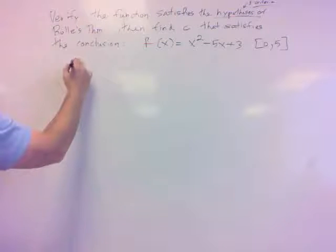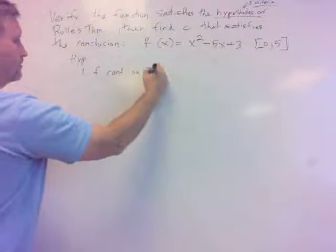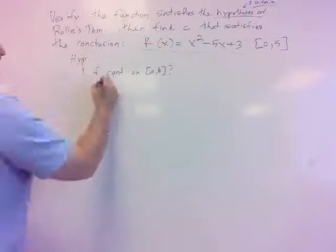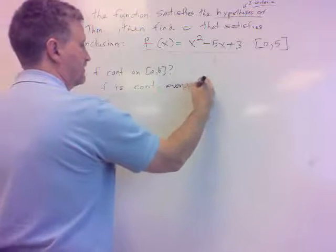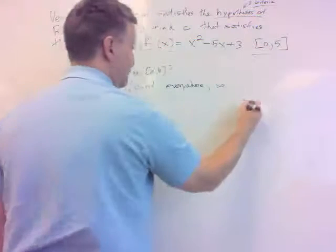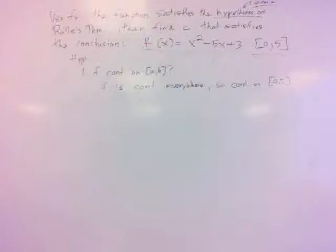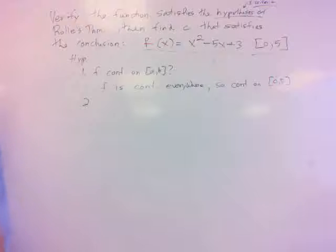So what do we want to do? Well, so here's your hypotheses. Number one hypotheses is what? F is continuous on A to B. Is that true here? Well, there's our function. Is there anywhere it's not continuous? No, that's a parabola. It's continuous everywhere. This particular F is continuous everywhere. All real numbers. So it's definitely continuous on zero five. So I was just basically thinking about that. Is there anywhere it's not continuous? So F is continuous on A to B. Sure is. Zero to five it is.